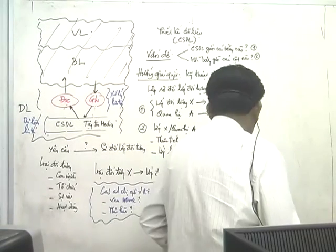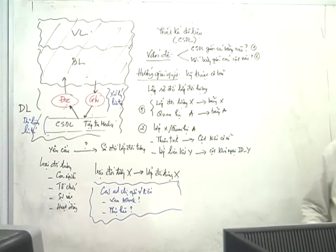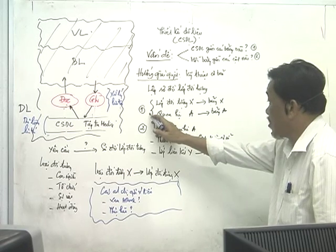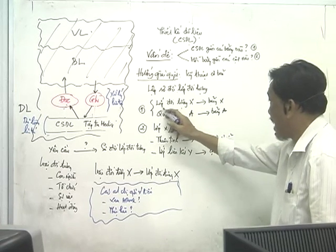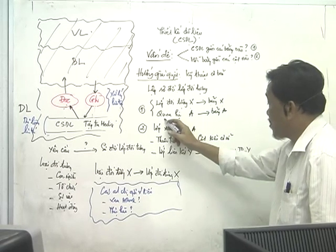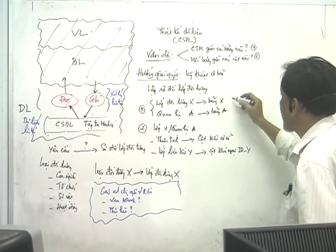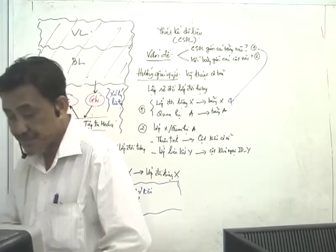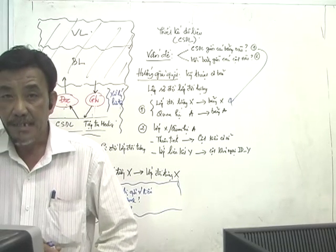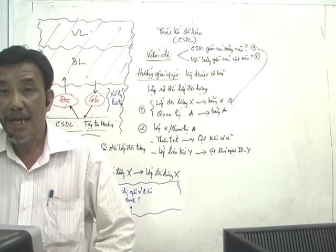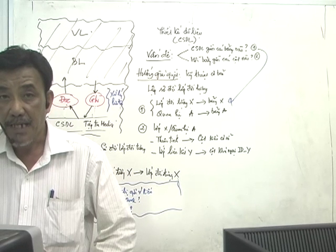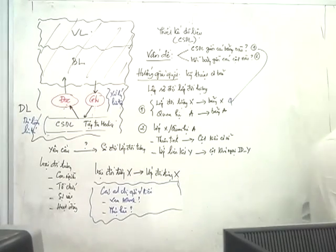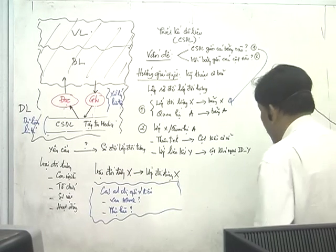Hướng giải quyết cơ bản nhất: đầu tiên chúng ta lập sơ đồ lớp đối tượng như đã học trong phần phân tích yêu cầu. Trong sơ đồ lớp đối tượng, có bao nhiêu lớp đối tượng thì mỗi lớp tương ứng với một bản, có bao nhiêu quan hệ thì mỗi quan hệ tương ứng với một bản - vậy là giải quyết xong vấn đề 1. Nhìn vào sơ đồ lớp là biết được có bao nhiêu bản. Trong cơ sở dữ liệu quan hệ, nó phẳng - do đó lớp đối tượng hay quan hệ đều ánh xạ xuống thành những bản trong sơ đồ dữ liệu.